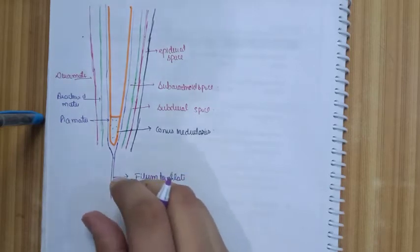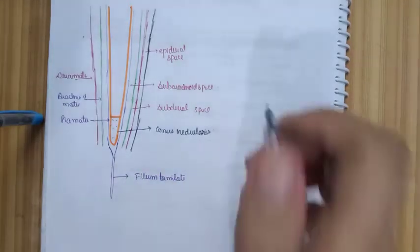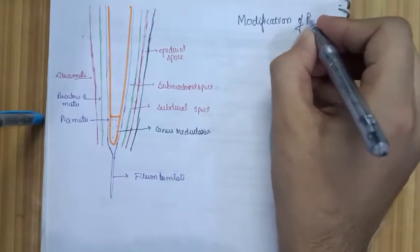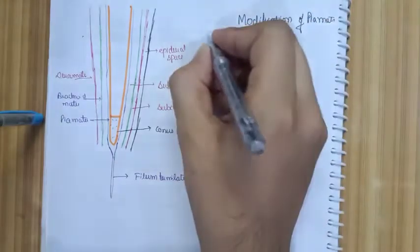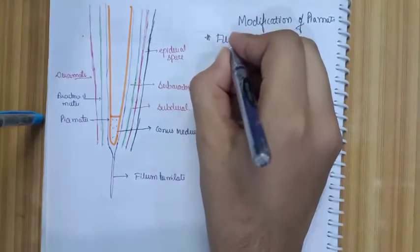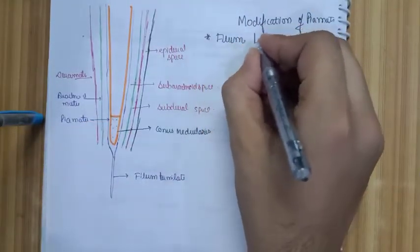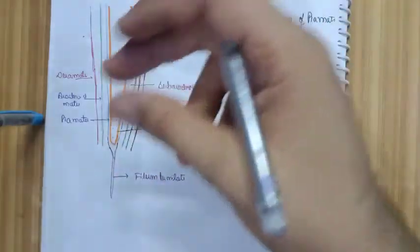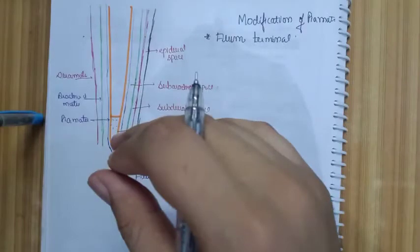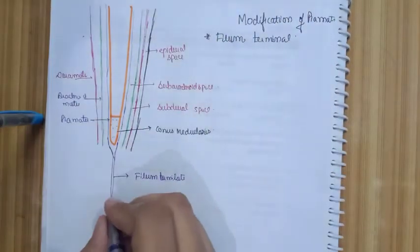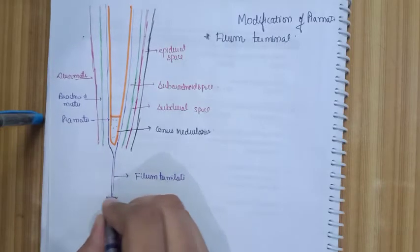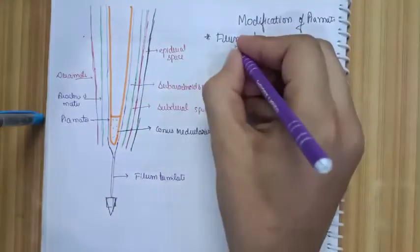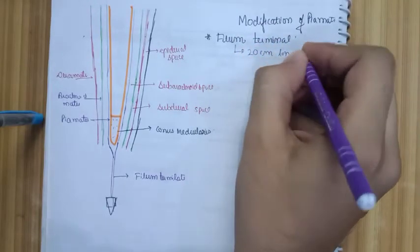The filum terminale finally attaches to the body or periosteum of the coccyx. Now let's discuss the modifications of the pia mater. The first modification is the filum terminale, which is a 20-centimeter long, tube-like cylindrical structure that projects down below the level of L1 and finally attaches to the body of the coccyx.